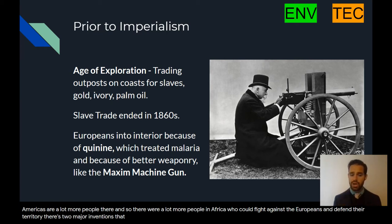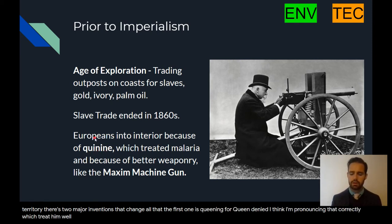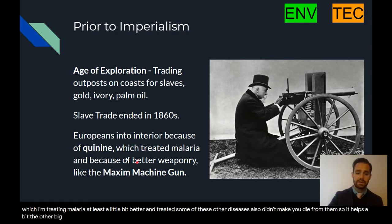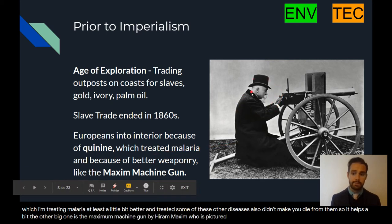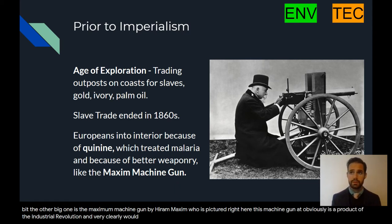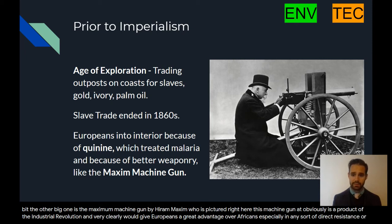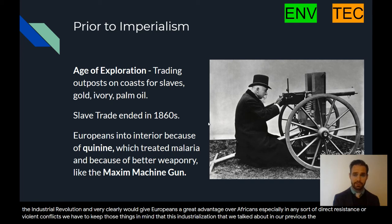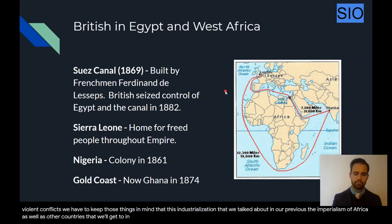Why weren't they looking at Africa first? Well, the interior of Africa is very dense jungle, with a lot of disease that Europeans would succumb to. In addition, Africa was much more well established than the Americas — there were a lot more people who could fight against Europeans and defend their territory. Two major inventions change all that: quinine, which treated malaria and other diseases at least somewhat, and the Maxim machine gun by Hiram Maxim, a product of the Industrial Revolution that gave Europeans a great advantage over Africans in any direct violent conflict.